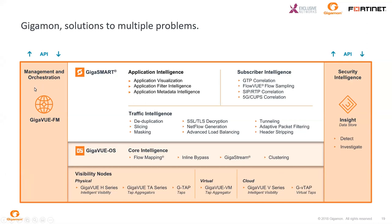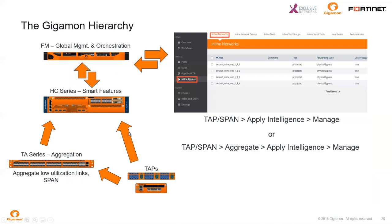This slide is an overview of the Gigamon fabric. Down here you have all the nodes in physical or virtual form, followed by all the core intelligence features available in most components. Up here you have the GigaSmart features — those are the intelligent feature licenses you can apply to the HC boxes, which we'll discuss in more detail when we cover the HC series. On the sides you have Fabric Manager, which we'll cover in the Management and Orchestration episode, and Insight. This hierarchical view shows your taps, aggregation, HC series, and Fabric Manager — all available in physical and virtual form factor.